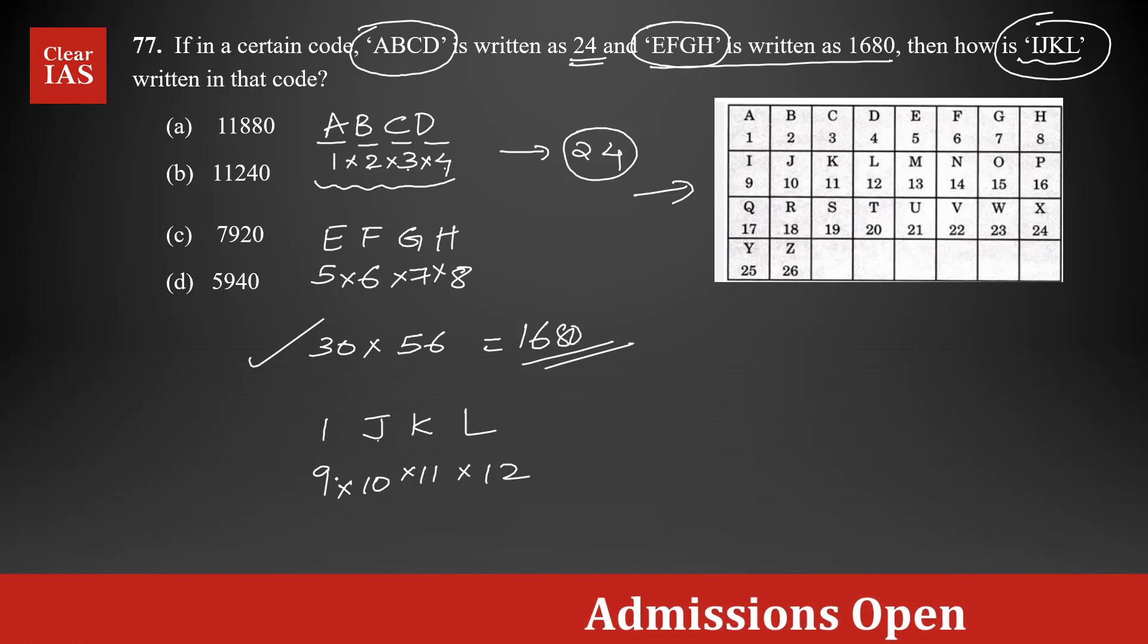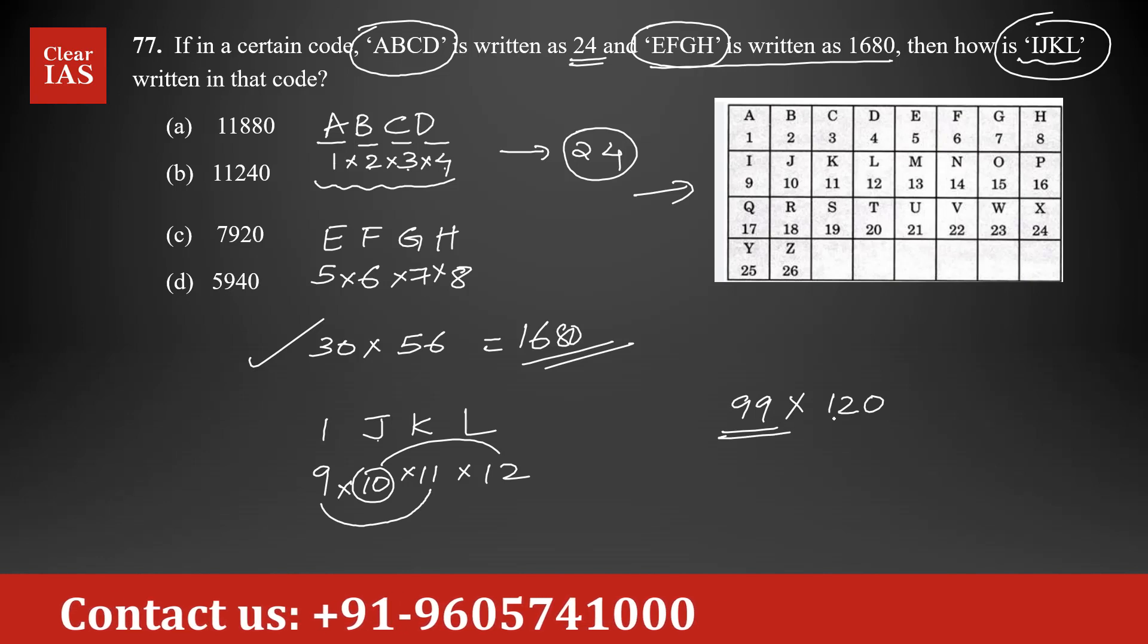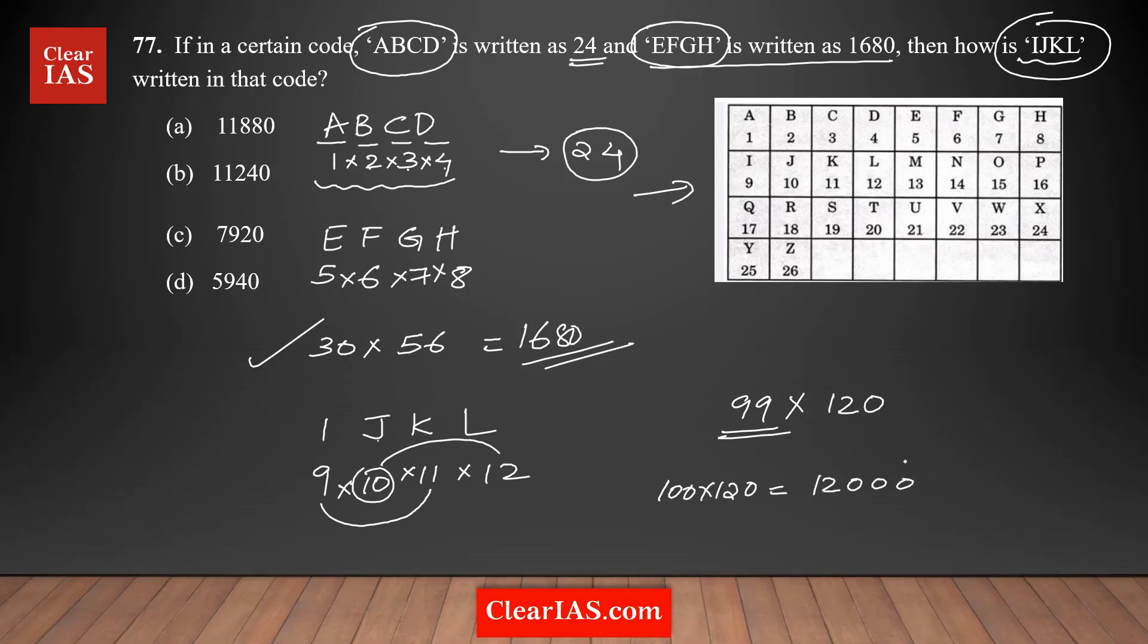I'm going to start with 9 times 11, which is 99, times 10 times 12, because it's always easy to multiply with 10. So 10 times 12 is 120. It is always easy to find what is 99 times 120.